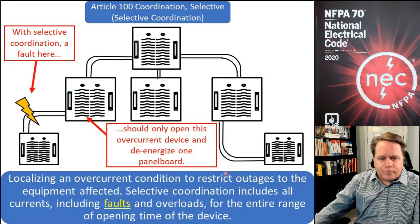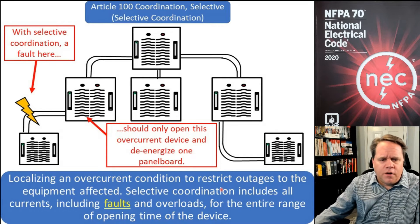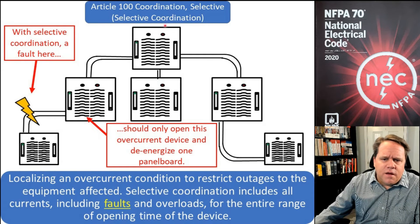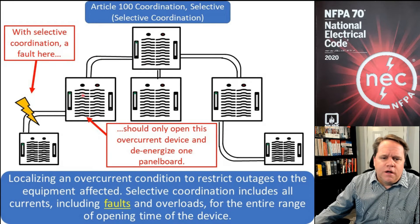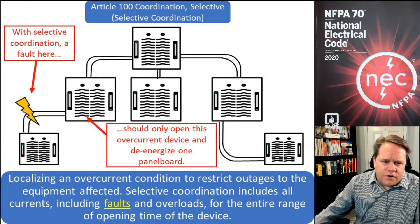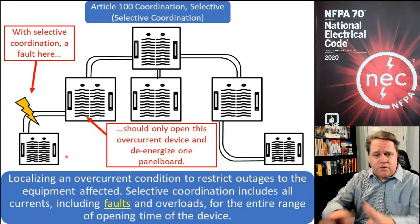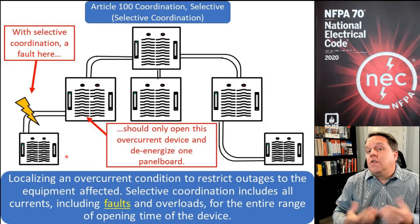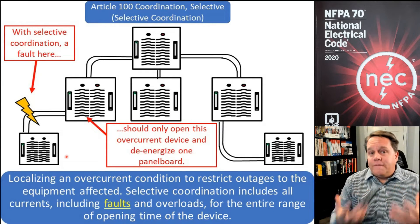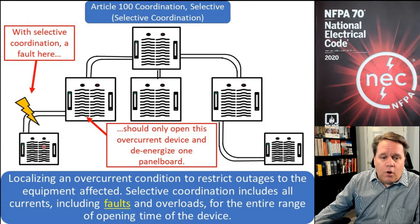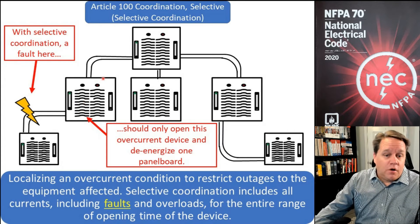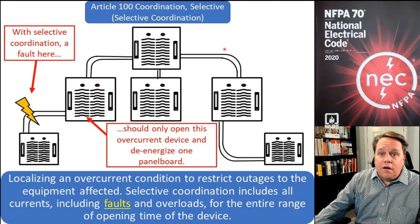In my diagram here — and I apologize, I'm not a better artist — I have a main with a 1200 amp main breaker, feeding a panel through a 400 amp breaker, and then feeding another panel through a 50 amp breaker. Now we have a fault on this 50 amp circuit: a bolted fault where the black and red conductors contact each other, generating 5,000 amps. Will 5,000 amps open a 50 amp overcurrent device? Yes. Will it open a 400 amp device? Sure. Would it open an 800 amp device? Yes.